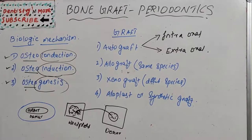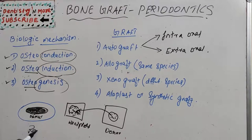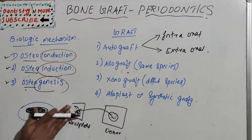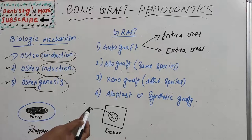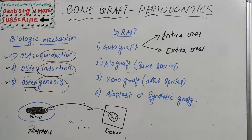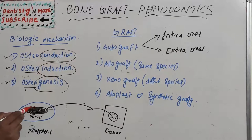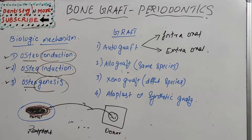Osteoconduction is the formation of bone by osteoblasts from the margins of the defect on the bone graft material. A graft material is taken from the donor site and implanted at the defect. Bone formation occurs by osteoblasts at the margins of the defect on the graft material.